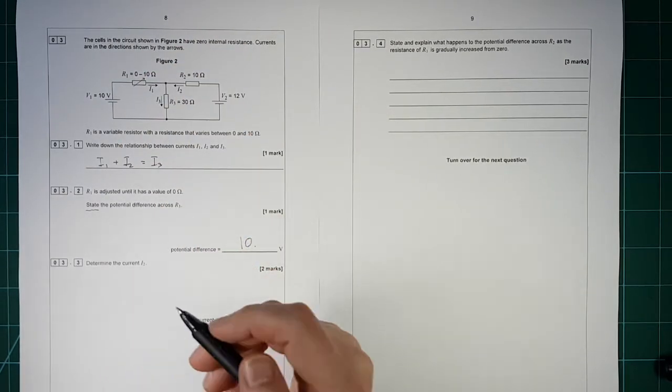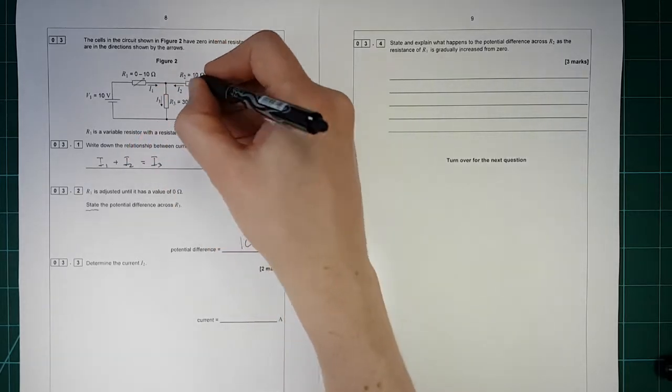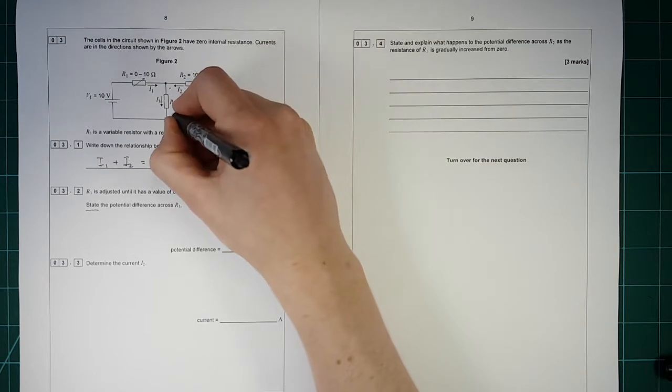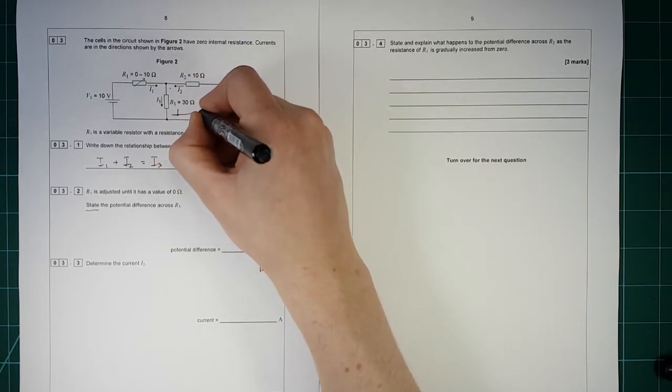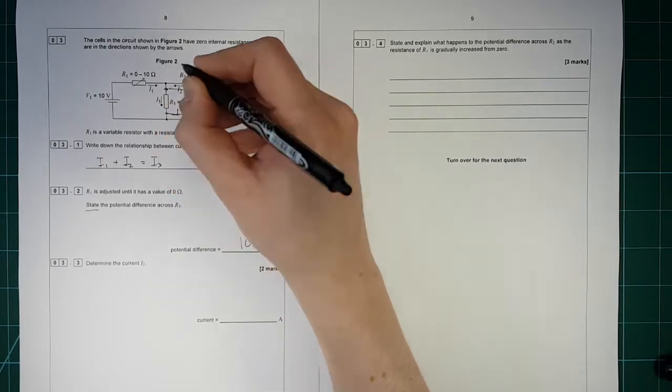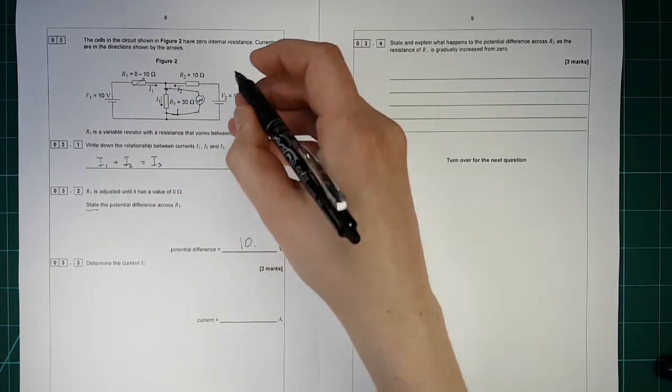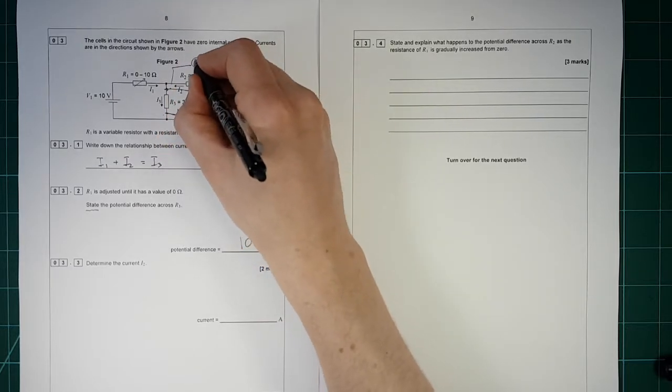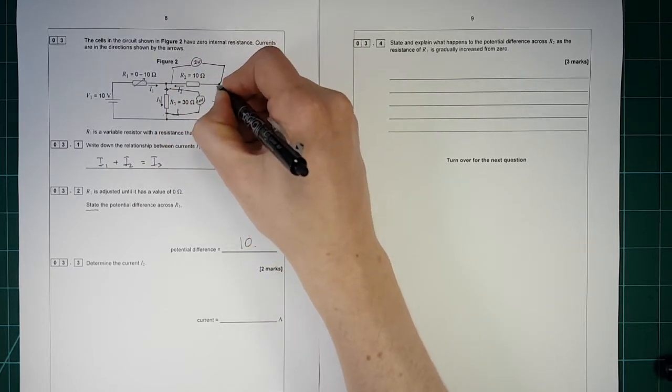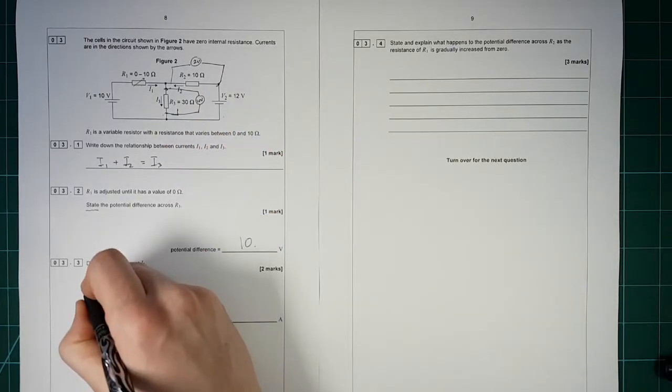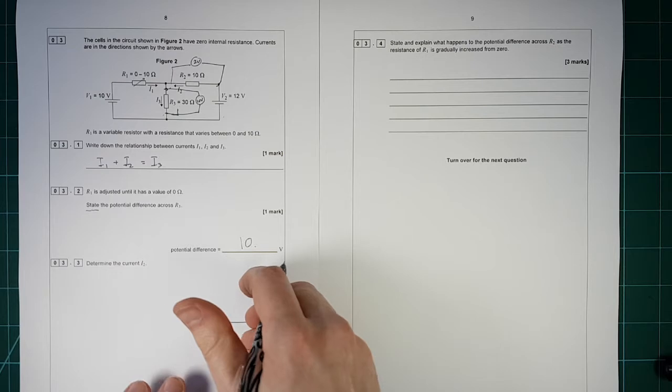Determine the current I2. Okay, so this is going to have 10 volts across it. Draw that over here. This has 12 volts across it, so if we go up 10 volts, we have to go up another 2 volts in order to get to there. So 10 volts across that one, 2 volts across that one. So we have, we just use Ohm's law for this.